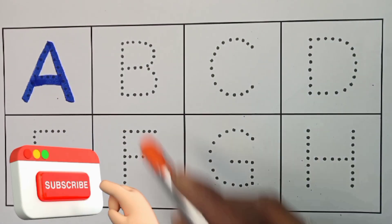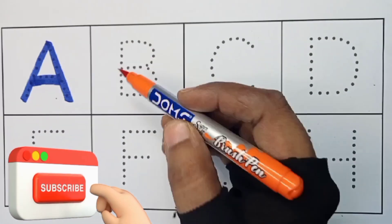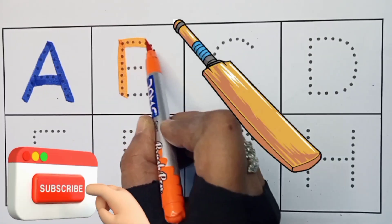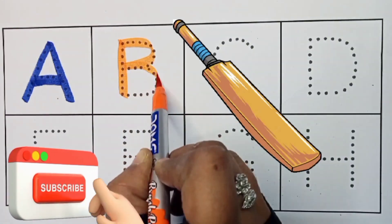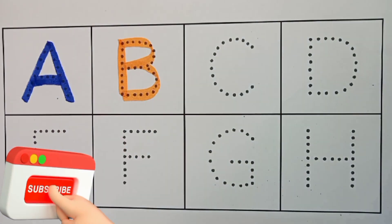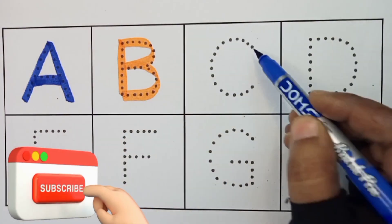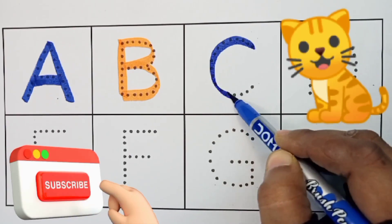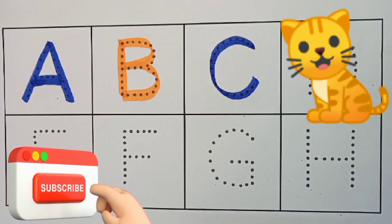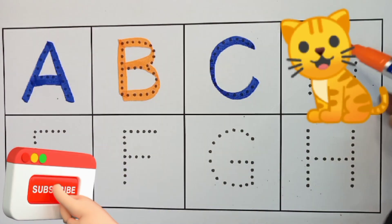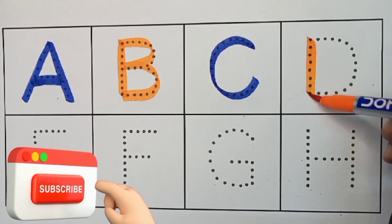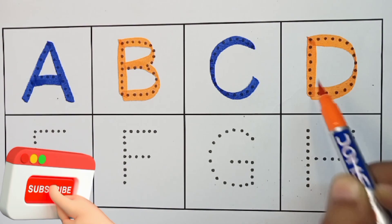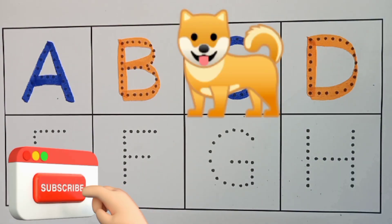Orange color. B. B for bad. Blue color. C. C for cat. Orange color. D. D for dog.